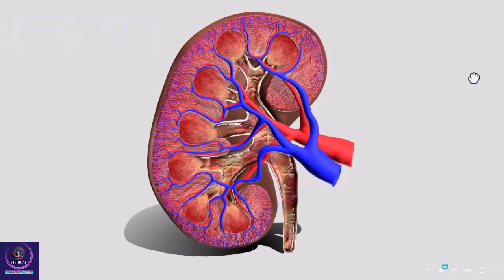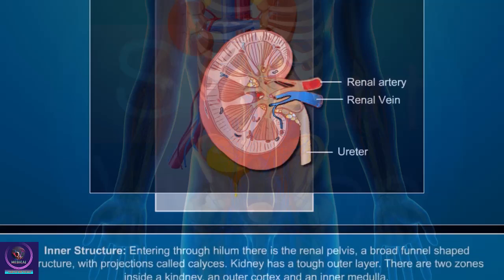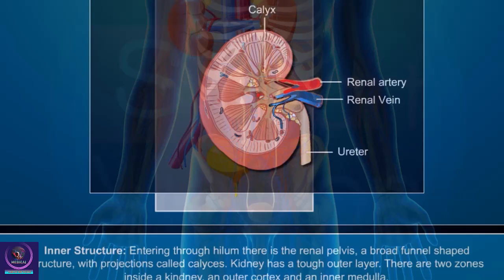Blood vessels and nerves enter into the kidney through a notch called the hilum. Inside, there is a renal pelvis, a broad funnel-shaped structure with projections called calyces.